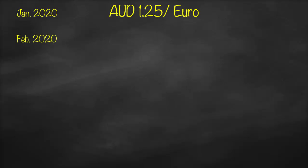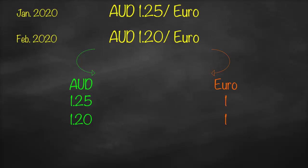Another example: 1.25 Australian dollar per euro; after one month it is 1.2 Australian dollar per euro. We have two currencies: Australian dollar and euro. I need to pay 1.25 Australian dollar to get one euro; after one month I need to pay 1.2 Australian dollar for the same one euro. So in order to get the same one euro, now we need to pay fewer units of Australian dollar. If we need to pay fewer units of Australian dollar, it means the value of the Australian dollar becomes higher.